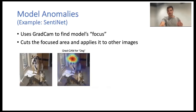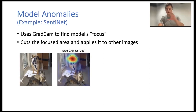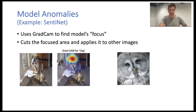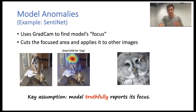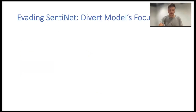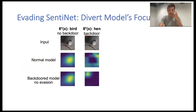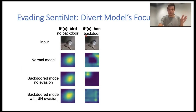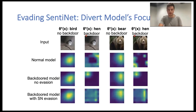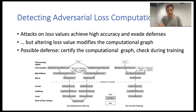We also test another defense based on model anomalies — how the model reacts to different inputs. One example is STRIP. It understands the focus of the model, and if it's focused on the backdoor pattern, it identifies it as a backdoor. However, it assumes that the model will truthfully report where it's focused. We can optimize the model to appear to focus on something other than the backdoor, and this works really well. Finally, we propose our own defense that focuses on checking the computational graph of training to see if there were modifications to it — specifically whether the loss was modified.